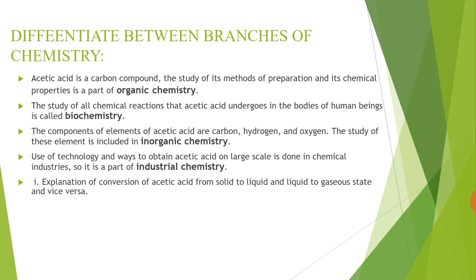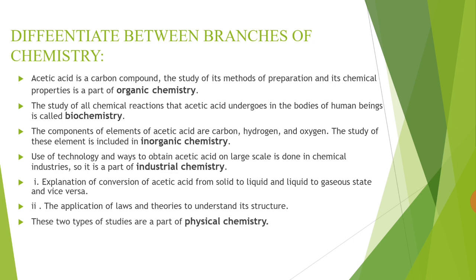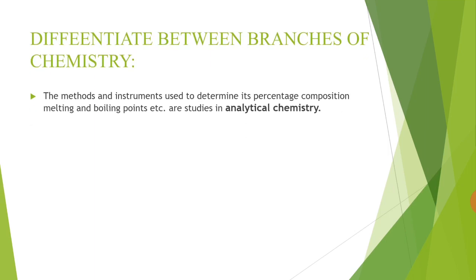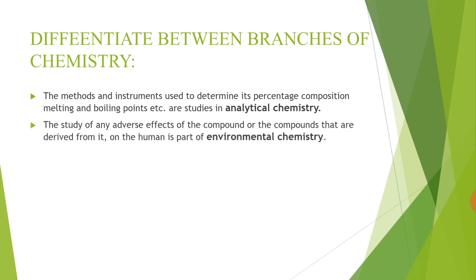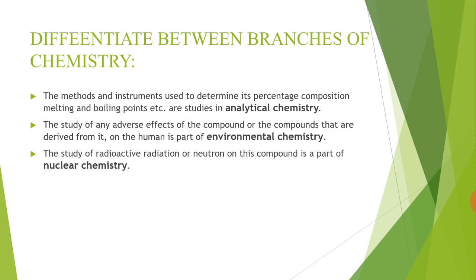The explanation of the conversion of acetic acid from solid to liquid and liquid to gaseous state, and vice versa, and the application of laws and theories to understand its structure — these two types of studies are part of physical chemistry. The methods and instruments used to determine its percentage composition, melting point, and boiling point are studied in analytical chemistry. The study of any adverse effect of the compound on human beings is part of environmental chemistry. The study of radioactive radiations or neutrons on the compound is part of nuclear chemistry.